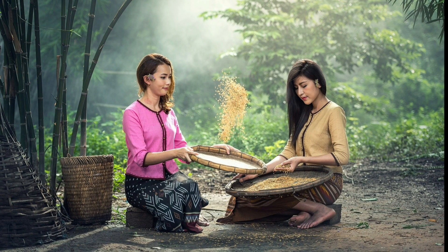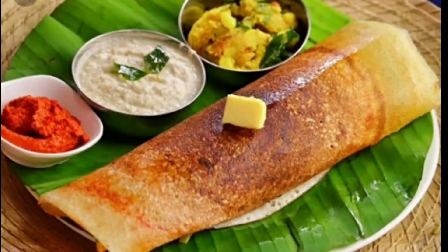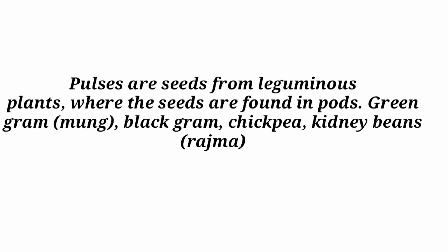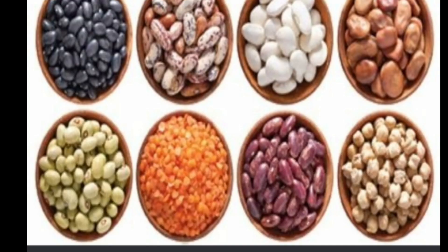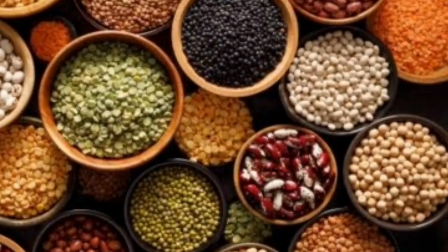As we know, wheat is ground into flour which is used to make chapatis, bread, macaroni and noodles. In the same way, rice is used to make dosas, idlis and other dishes. Pulses are seeds from leguminous plants where the seeds are found in pods. Green gram, black gram, chickpea, kidney beans and lentils are examples of pulses.